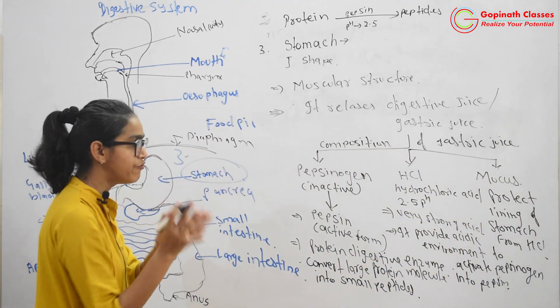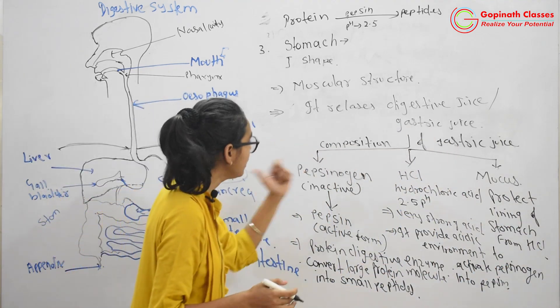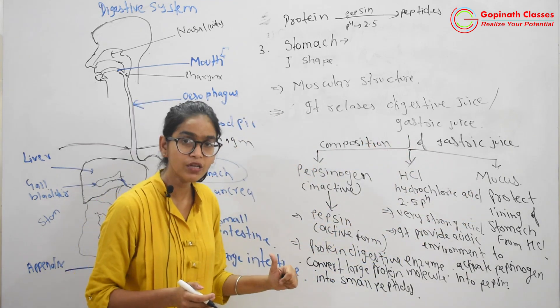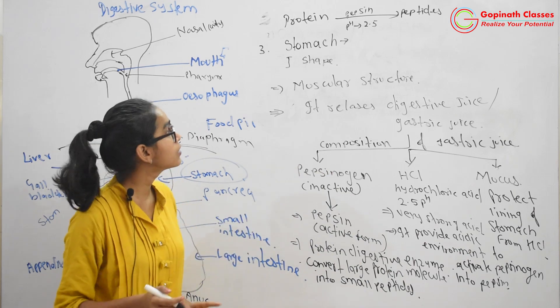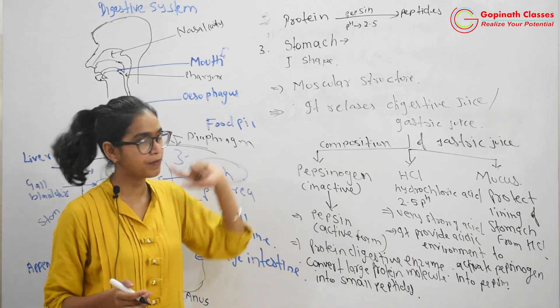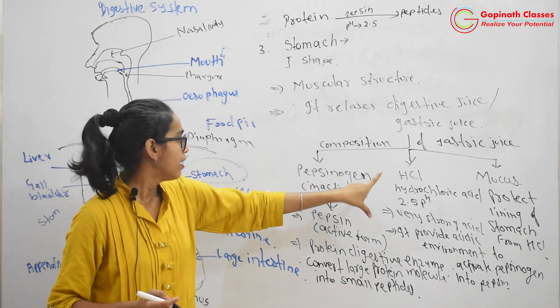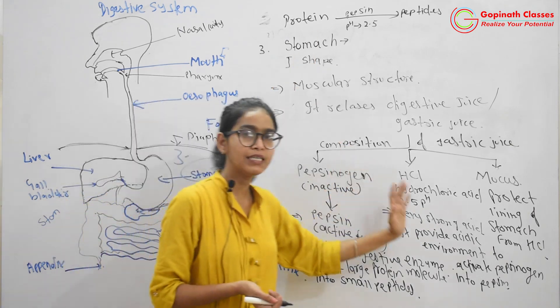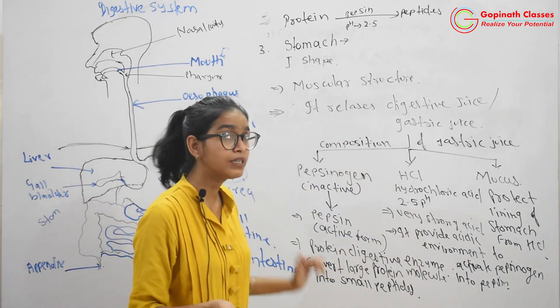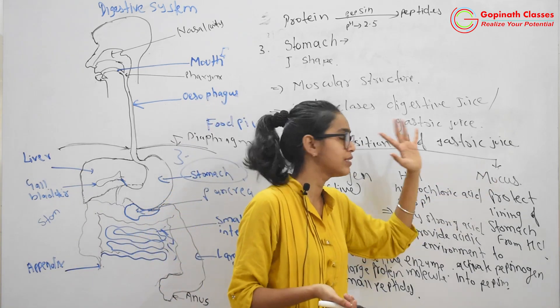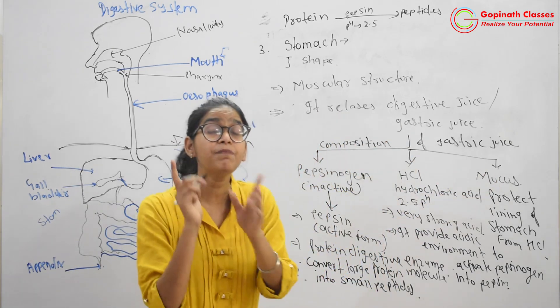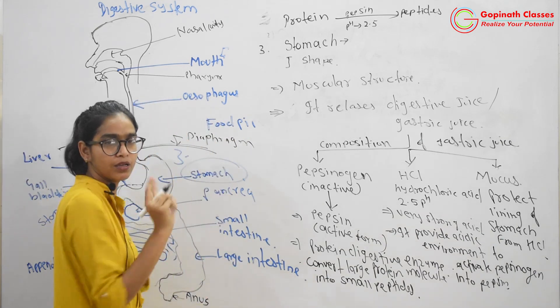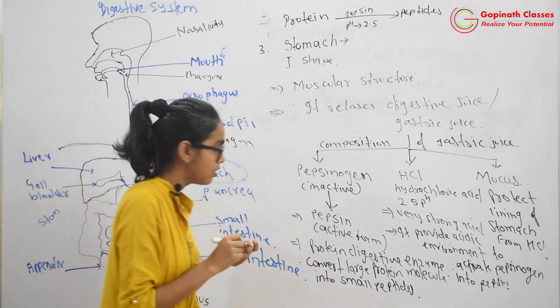Simple. These three of them are very very important. Pepsin, HCL, mucus. Pepsin's inactive form is pepsinogen. Who converts pepsinogen to pepsin? 2.5 pH of HCL. Its function is it converts protein into peptides. HCL provides acidic environment. Mucus protects stomach from HCL. The very first digestion of protein happens where? That is in the stomach. So this is stomach.